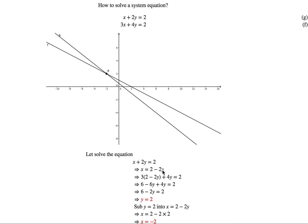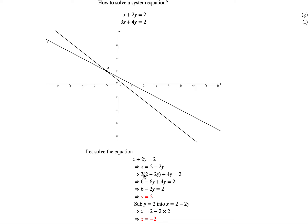Now how can we use the second equation? We substitute x equal to 2 minus 2y into the second equation: 3 times (2 minus 2y) plus 4y equal to 2. Simplifying the left-hand side, we get 6 minus 6y plus 4y equal to 2. Simplifying further, we have 6 minus 2y equal to 2.